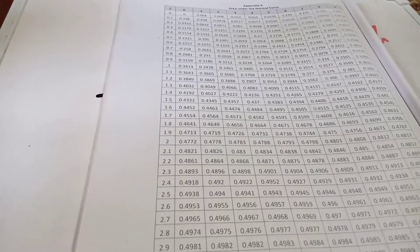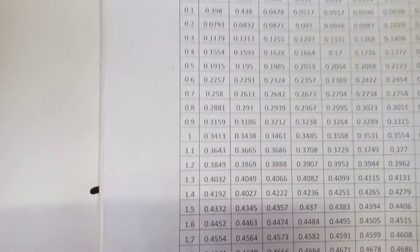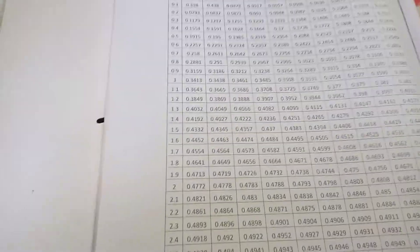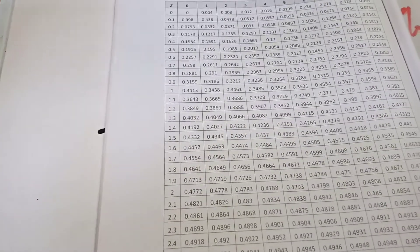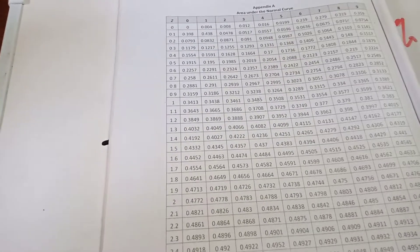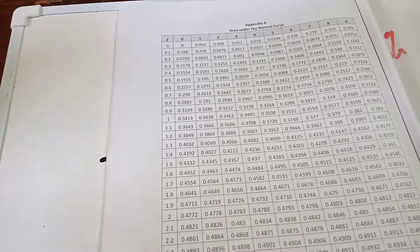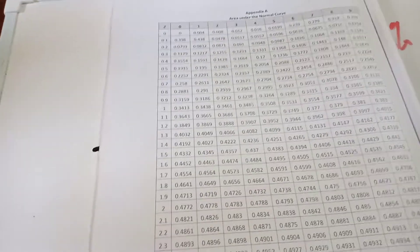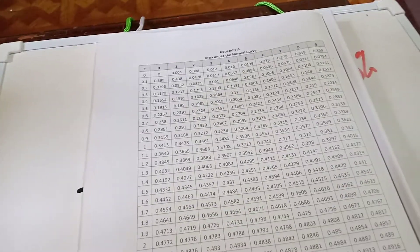This is what is called the area under the normal curve table. It has columns labeled zero through nine across the top, and rows from zero up to positive three down the side. The values already include the center, so they are usually added to or subtracted from 0.5000. Don't worry — I will also teach you how to use these table values.